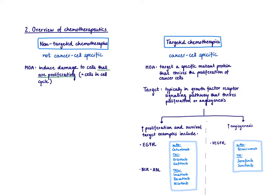Which of these drugs you choose if you have a mutation in the EGF receptor depends on the kind of mutation. A mutation in the tyrosine kinase that turns it on permanently will be successfully treated with a tyrosine kinase inhibitor — in this case you won't have success with a monoclonal antibody if the tyrosine kinase is on anyway. In contrast, if you have an overexpression of the EGF receptor, then a monoclonal antibody might be a good choice.